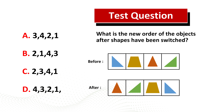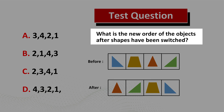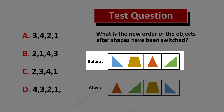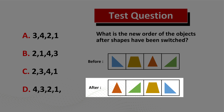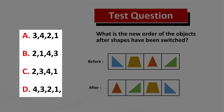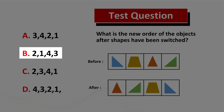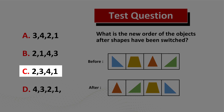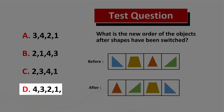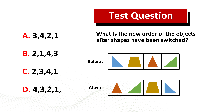Here is a real-life assessment test question. What is the new order of the objects after shapes have been switched? You're presented with a before picture of four objects and an after picture of the same objects in a different order. The four choices are: choice A: 3 4 2 1; choice B: 2 1 4 3; choice C: 2 3 4 1; and choice D: 4 3 2 1. Now might be a good time to pause this video to come up with the solution on your own.